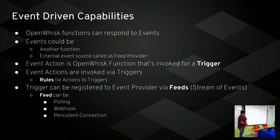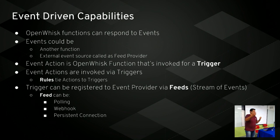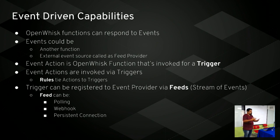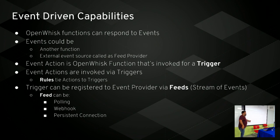Rules tie triggers to actions in OpenWhisk. There are three ways events get fired: polling - something keeps polling another thing; webhooks - how GitHub and Slack work, where you register a webhook with your function that gets called whenever something happens; and persistent connections - a service that stays running and calls the REST API when it receives an event from an external source.